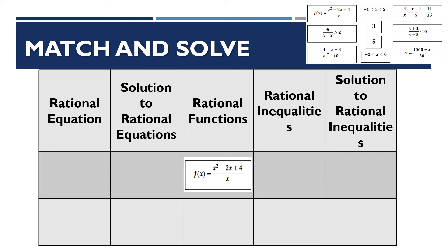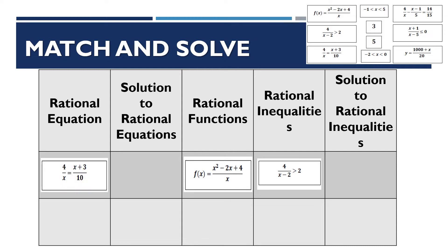The next one is 4/(x − 2) > 2. We have an inequality symbol, so it falls under column 4, which is rational inequality. Next, we have negative 1 < x < 5. This is the solution to a rational inequality, so it falls under column 5.